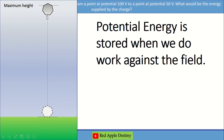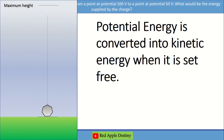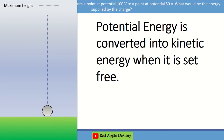The field direction is downward. If we lift the ball or stone, we do work against the field and potential energy is stored. If we then set the stone free, it moves in the direction of the field and the potential energy converts to kinetic energy.